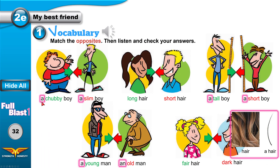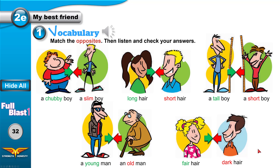Did you notice that we have 'a', 'a', 'a', 'an', 'a' — but with hair we have no 'a' or 'an'. Why? Hair is an uncountable noun. When we say 'a hair' that means a single one, just one — like 'there is a hair in my soup.' But if we have more than one, we say 'hair,' not 'hairs.' Uncountable noun.